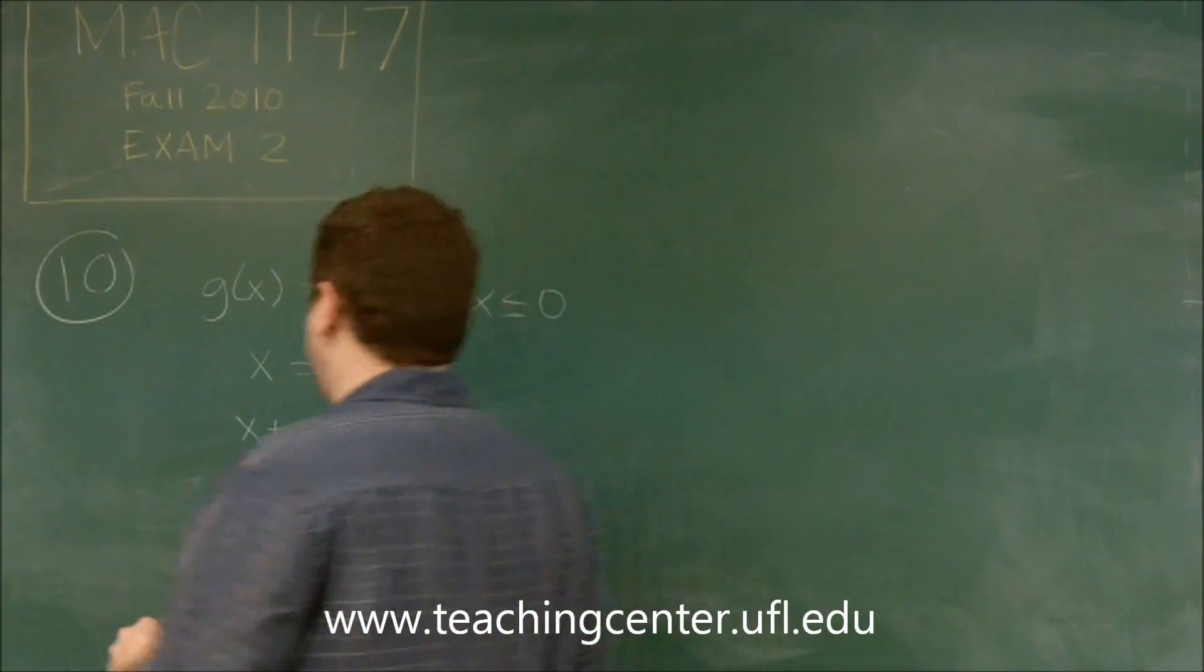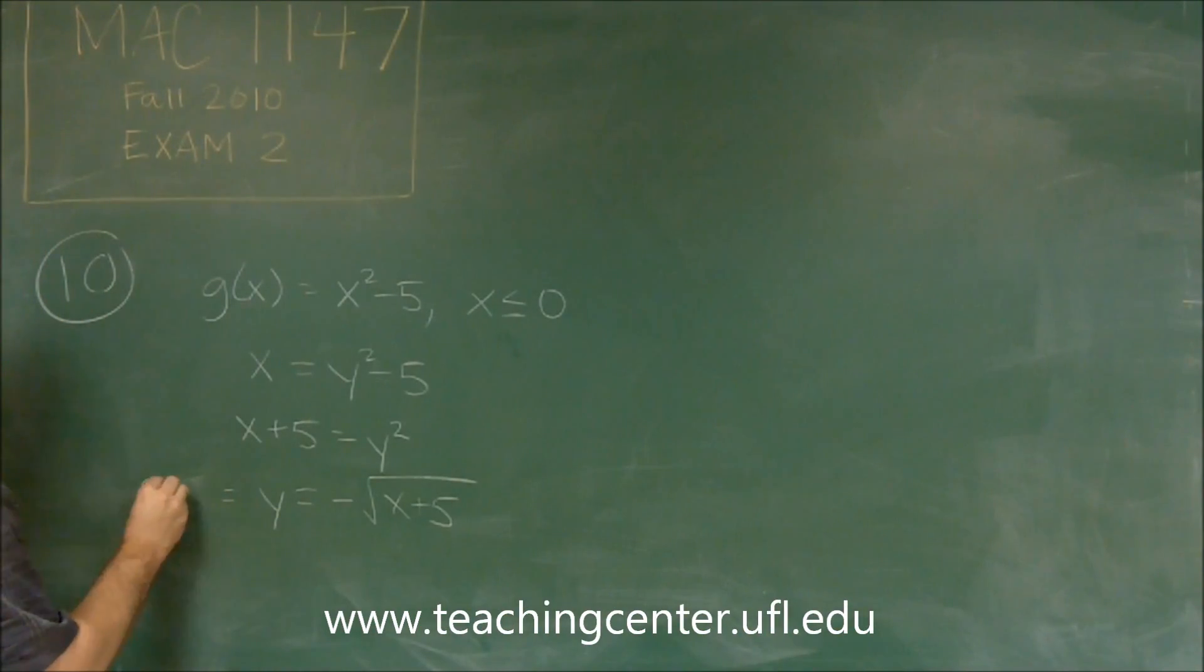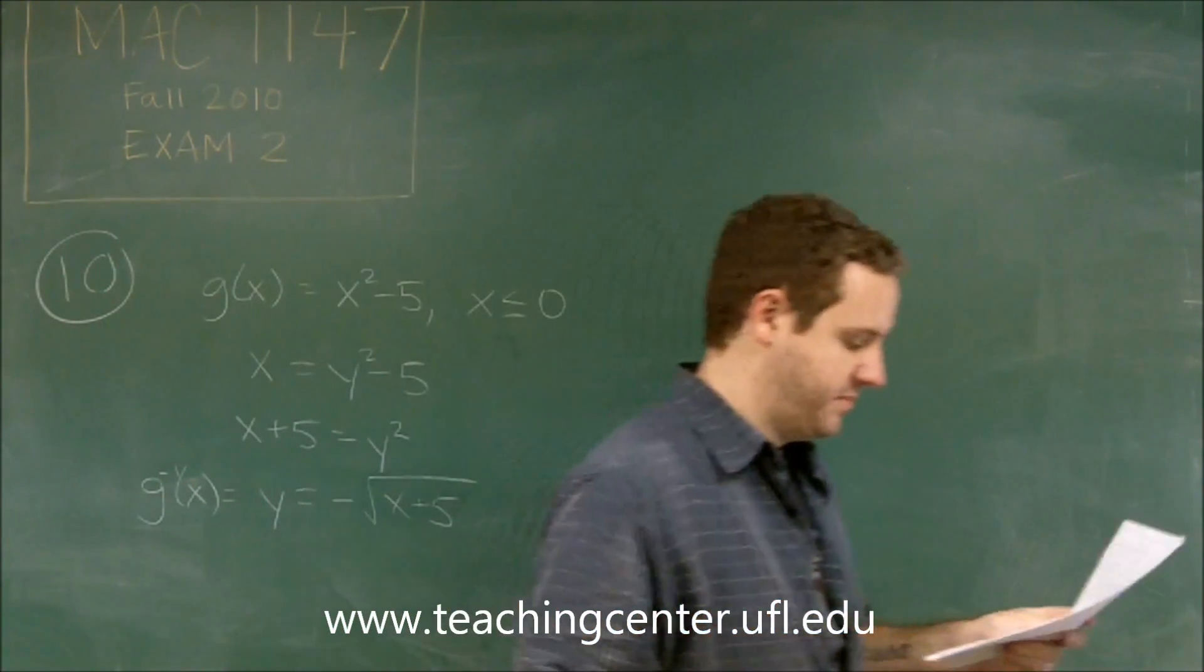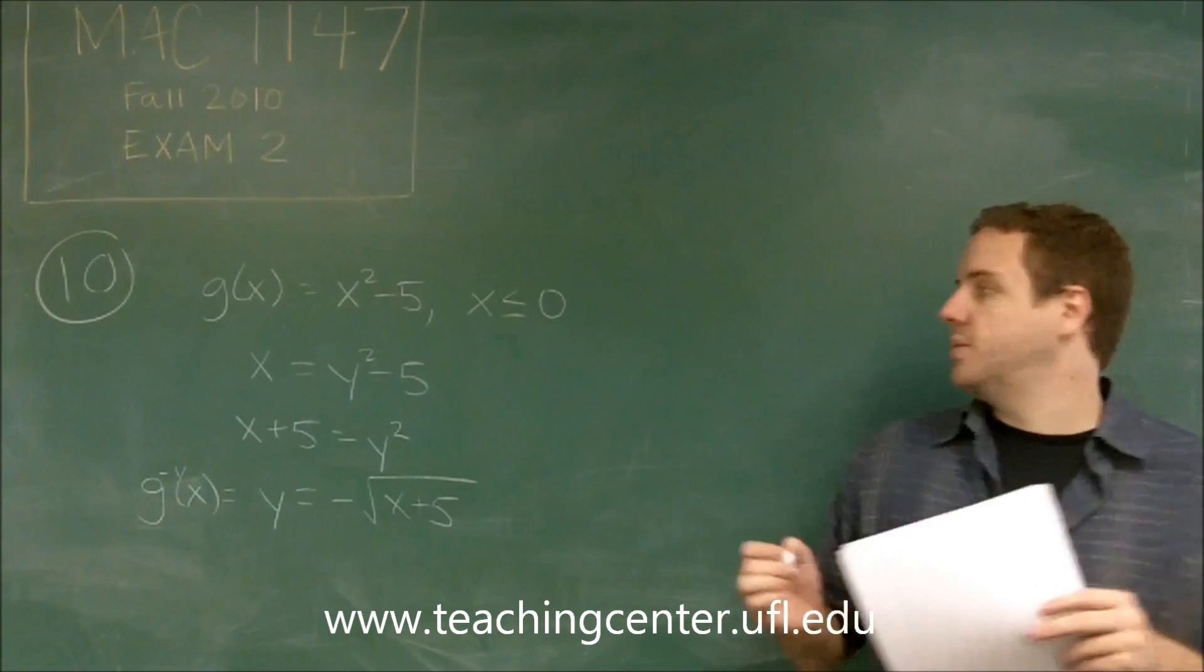So this is our, let me write that as then, our g inverse here is negative square root of x plus 5. So now we can continue with the problem.